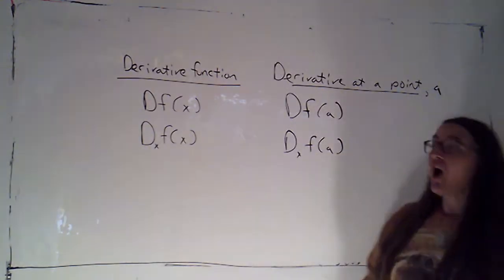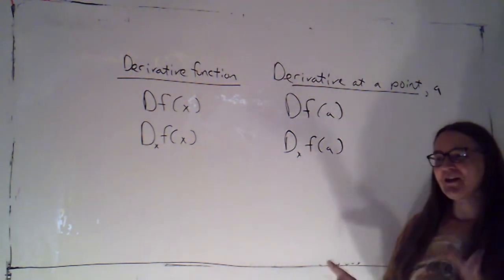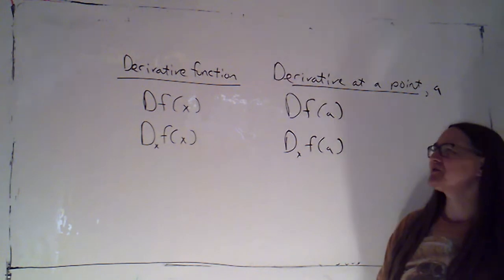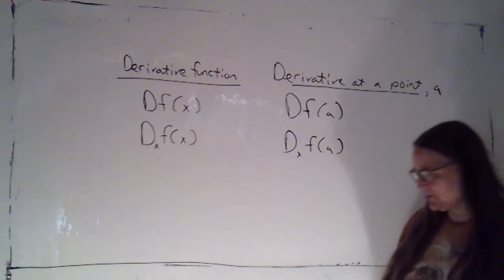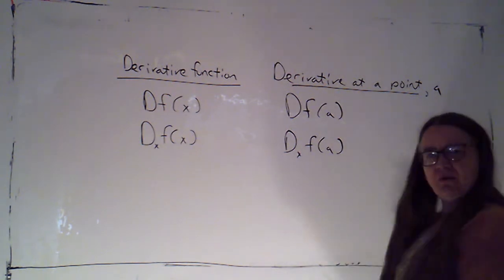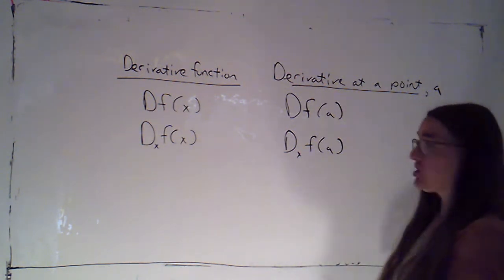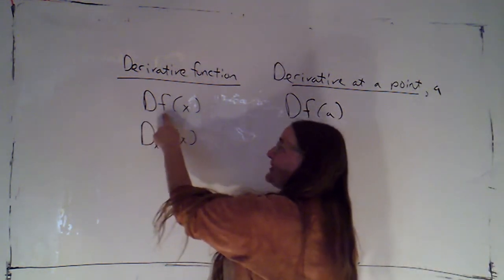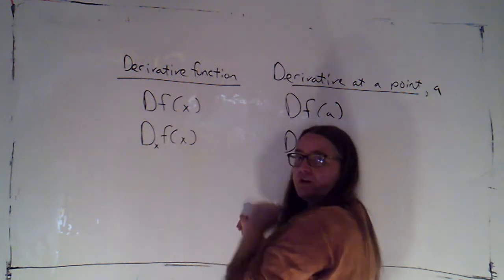I've got two more options up here on the board. I confess I forgot to include them initially. We changed textbooks about a year or so ago, and this didn't used to be included, but it's included in the new textbook. This isn't as common notation, but you may encounter it. So for the derivative function, we can put a capital D in front of the name of the function, and that means the derivative of f, which is a function of x. If you're evaluating that at a particular point a,